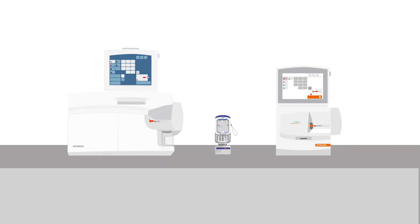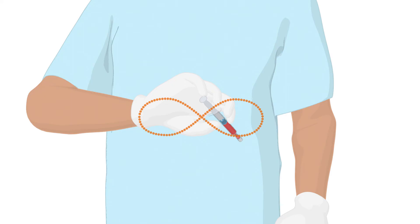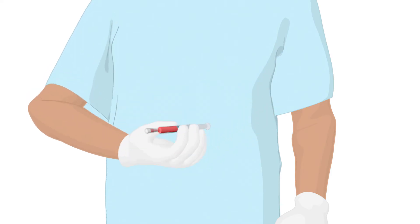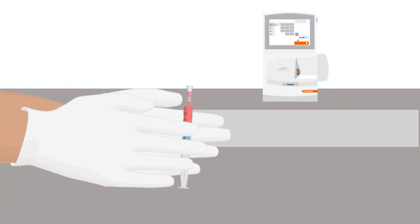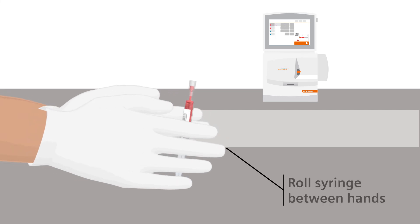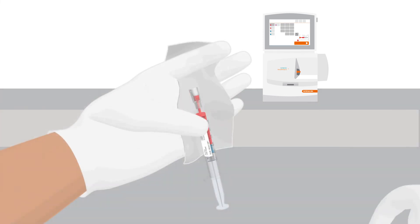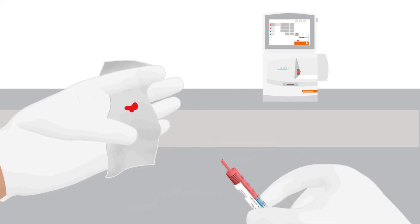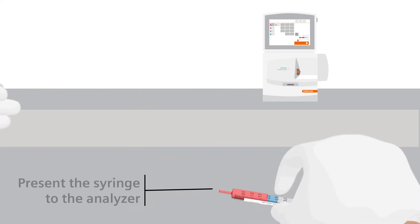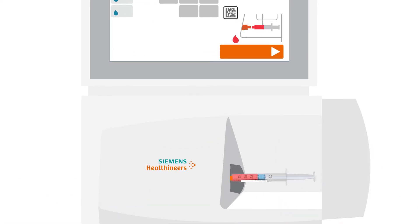Follow a two-step mixing process: first by rotating your wrist back and forth, and then rolling the syringe between your hands about 10 times. Remove the cap from the syringe and expel the first few drops of blood into a gauze pad. Present the sample to the analyzer and start analysis.